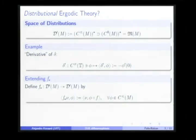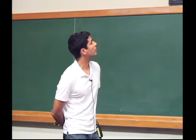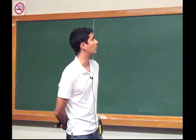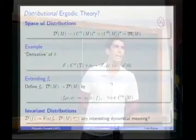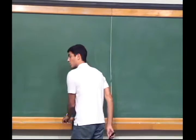We have essentially the same formula, and of course we can define the space of invariant distributions as the fixed point set of this new operator. The natural question is: do these invariant distributions have any interesting dynamical meaning? Well, there is a very simple and rather silly example.